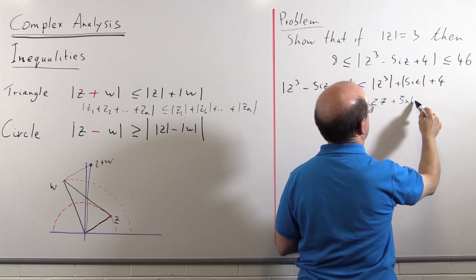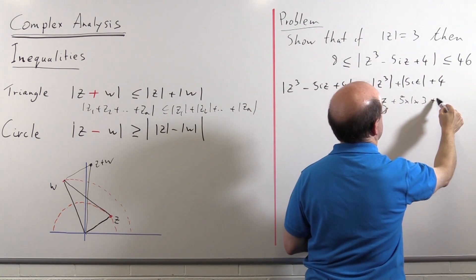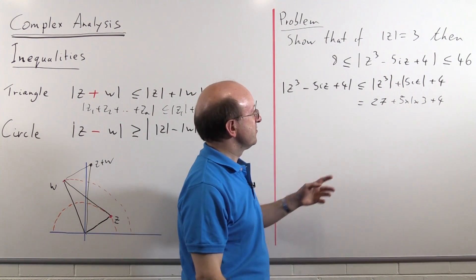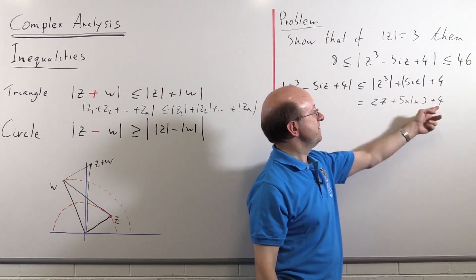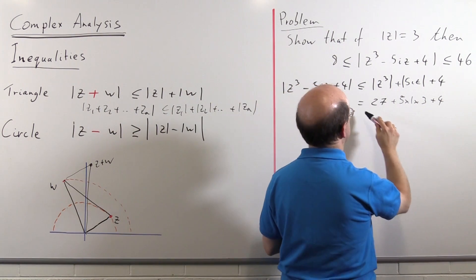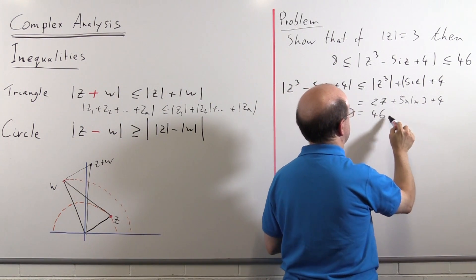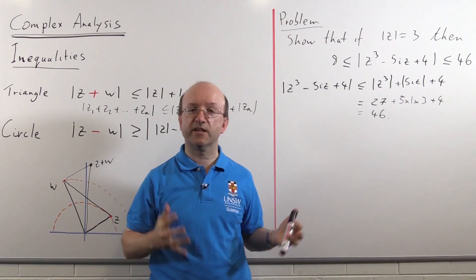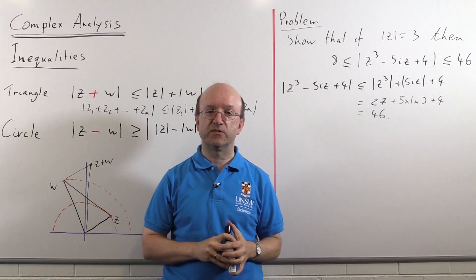well, we'll write it out, shall we, 5 by 1 by 3, plus the modulus of 4, which of course is just 4. So we've got 27 plus 15 plus 4, which is 46. So that's the first part done. The triangle inequality part, always very straightforward.